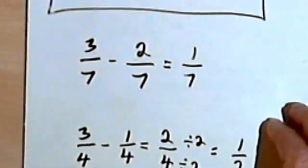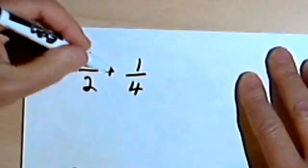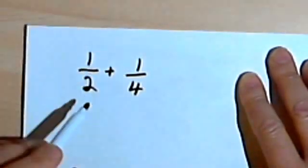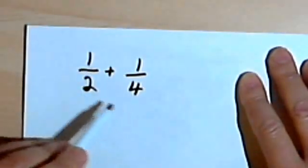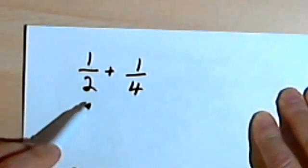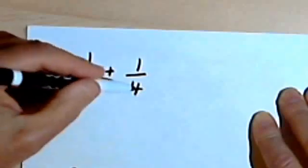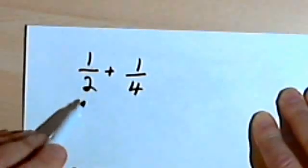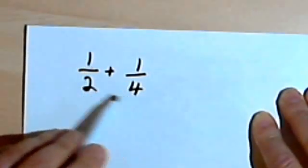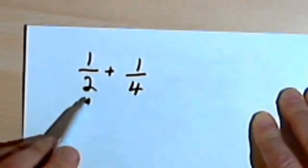Let's look at what happens when the denominators are different, because that's where people have the most problems. We've got 1 half plus 1 quarter. The denominators are different, so we have to find a common denominator — in other words, find some way of turning either one or both of these denominators into the same number as the other.